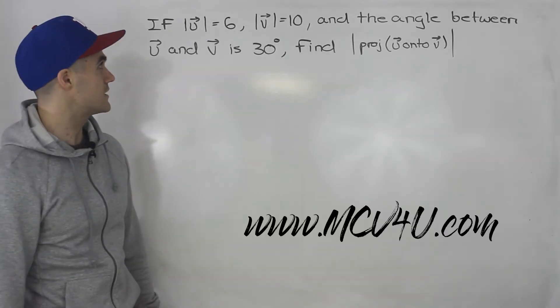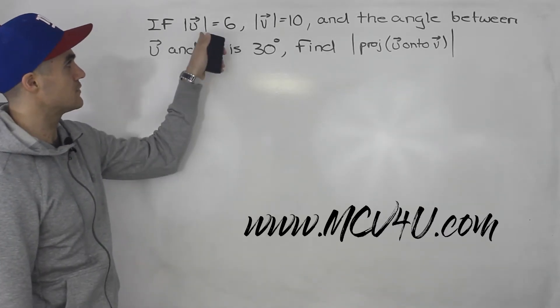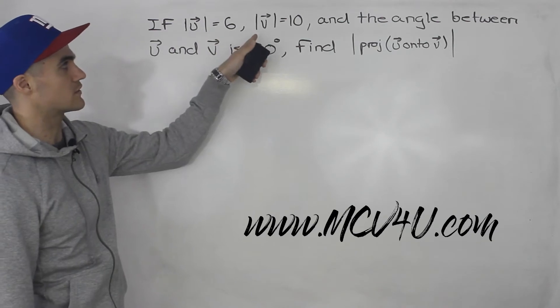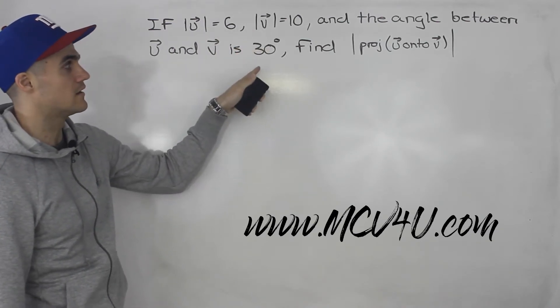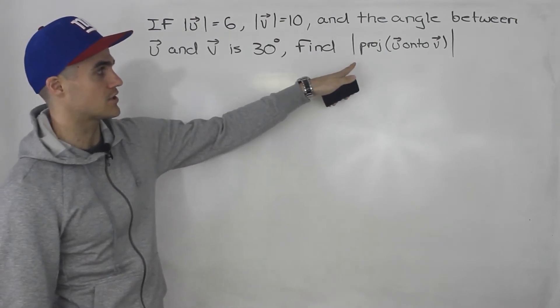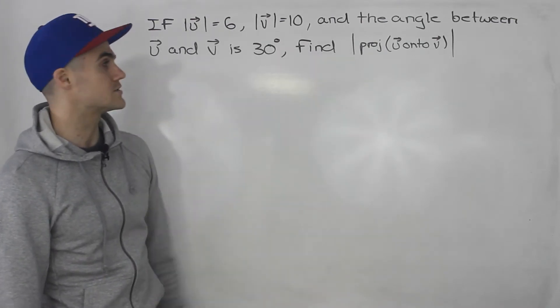Welcome back guys, Patrick here. Moving on to the next question. So if the magnitude of vector u is 6, magnitude of vector v is 10, and the angle between u and v is 30 degrees, find the magnitude of the projection of u onto v.